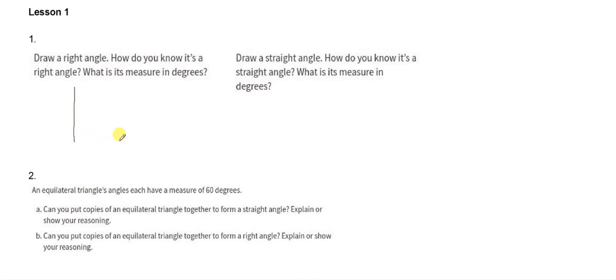A right angle is going to look like the corner of a square or rectangle, and that's how you know it is 90 degrees. How do you know? It looks like the corner of a square and it equals 90 degrees.